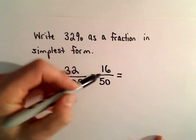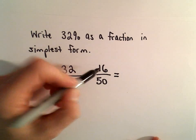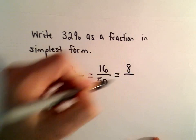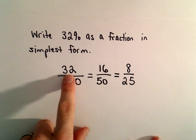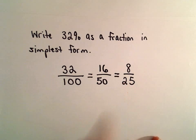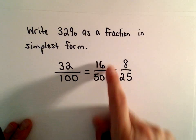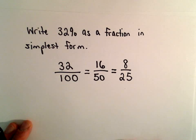But those are both still even. So let's see, 16 divided by 2 would be 8, 50 divided by 2 would be 25. So we could have just divided top and bottom by 4 at the very beginning, but I usually just always start dividing by 2 if I see they're even.